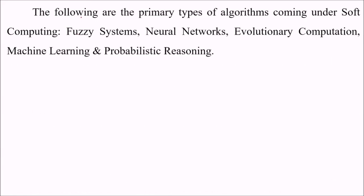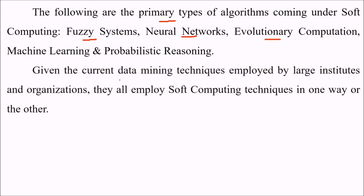There are various primary types of algorithms that come under soft computing: fuzzy systems, neural networks, evolutionary computation, machine learning, and probabilistic reasoning. Given current data mining techniques employed by large institutes and organizations,